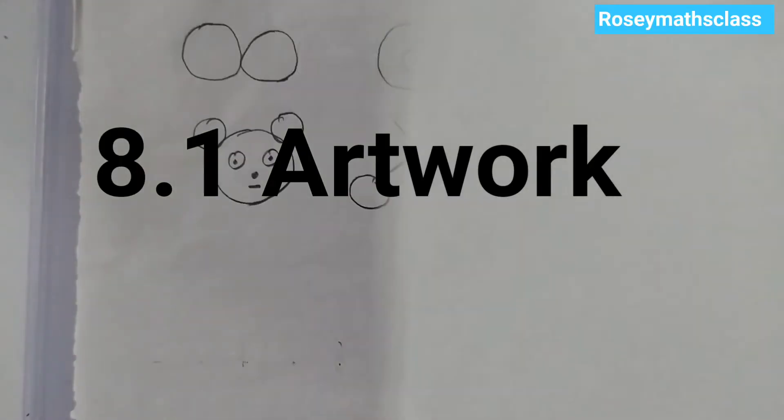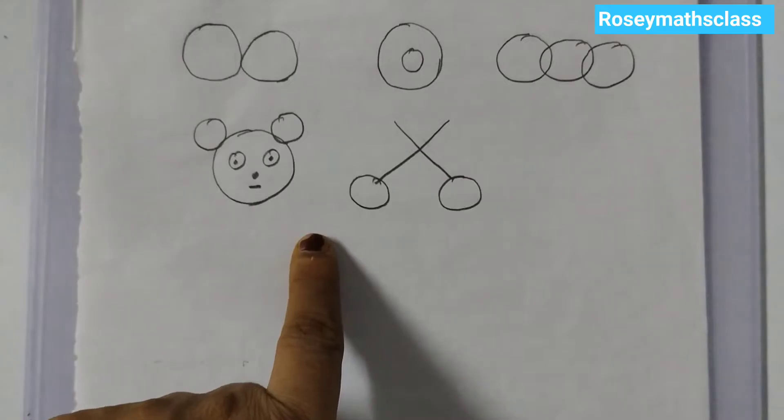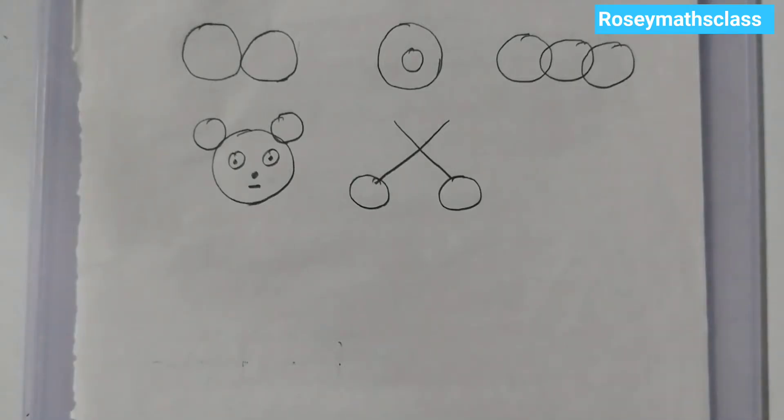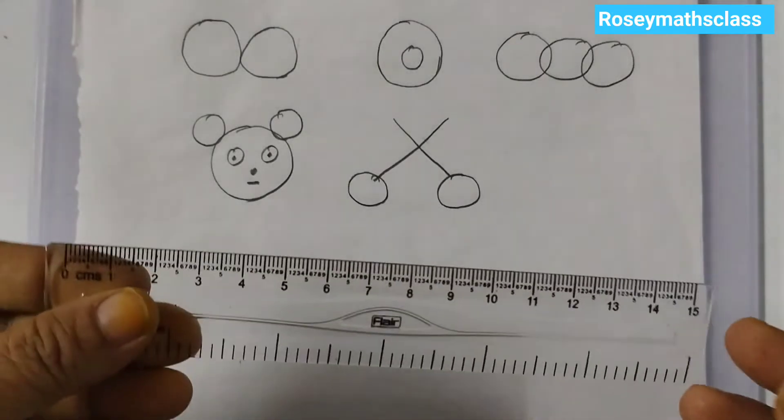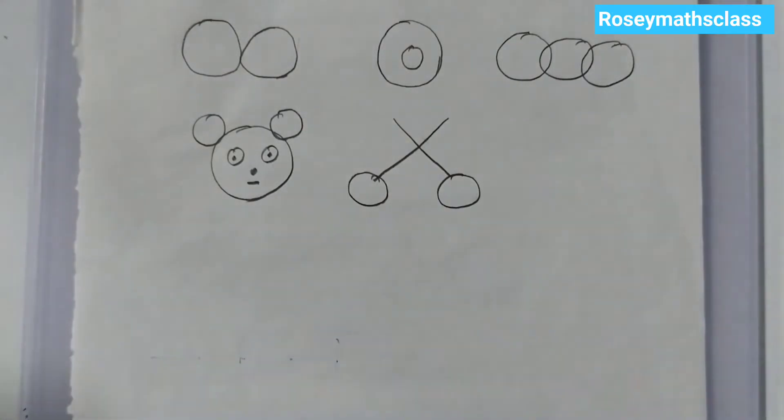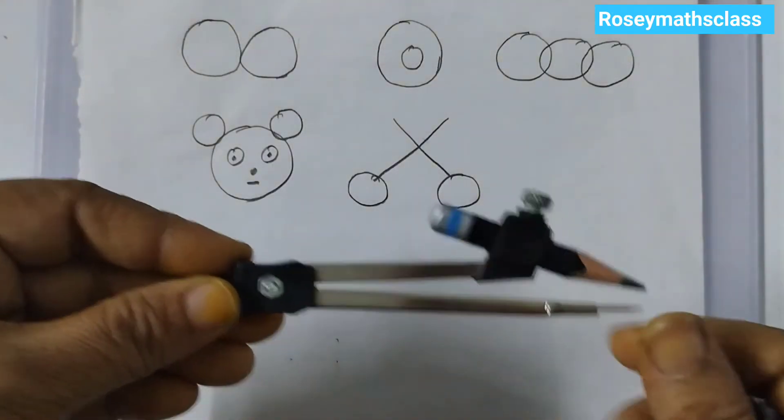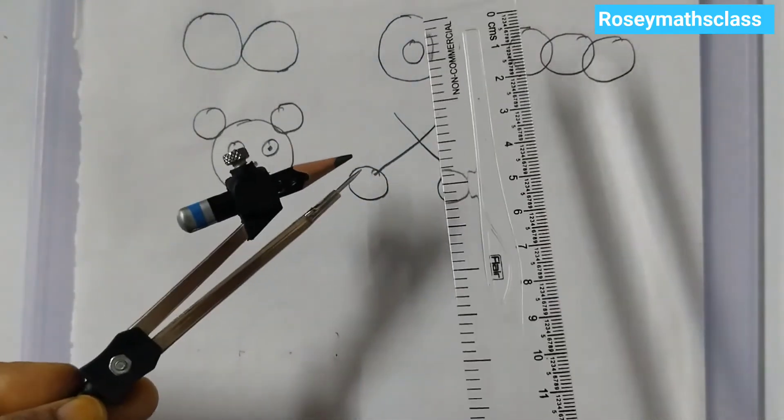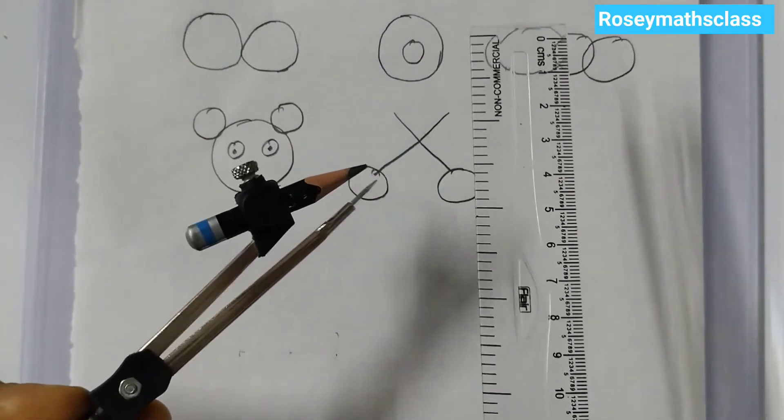We have already done some artwork freehand. So these are the figures that we had drawn freehand. Also we did construction of a person. Today we will do constructing wavy wave using a ruler, that is a scale, and a compass. This is a compass. So ruler and compass we are going to use to make wavy wave.